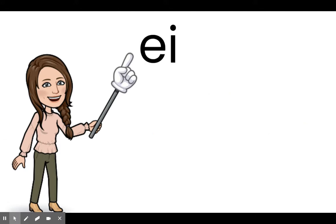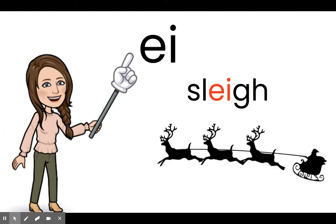We can also get the long A sound with E and I. This is the word sleigh. You'll notice that the G-H at the end of the word sleigh are silent. E-I together is another pattern for the long A sound.